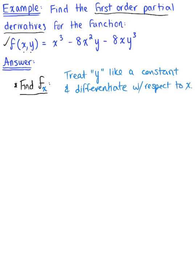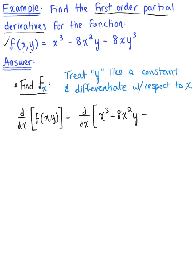Taking our original function, we are differentiating with respect to x, so we take the d/dx of both sides: d/dx of x³ - 8x²y - 8xy³. The partial derivative with respect to x — the first term is just x³, and we know how to differentiate that: that's simply 3x².